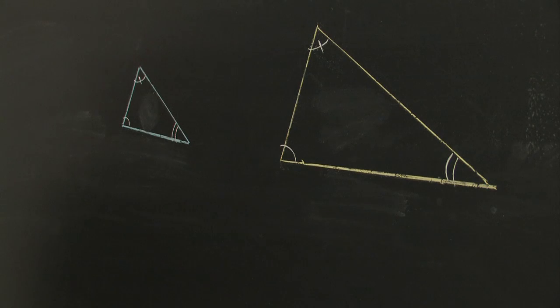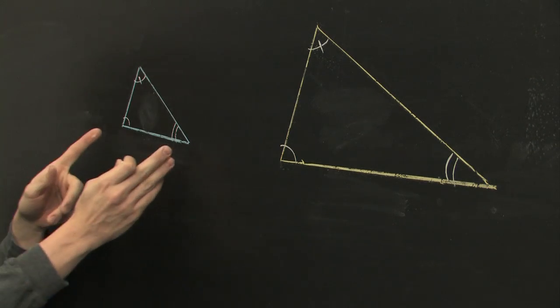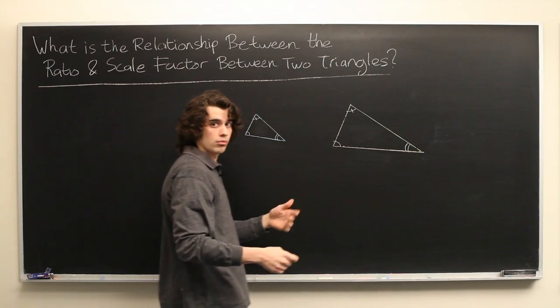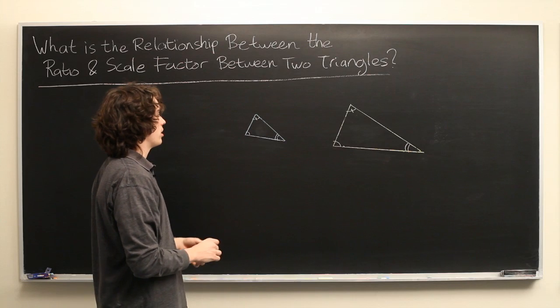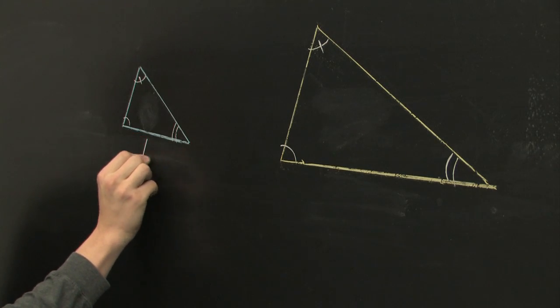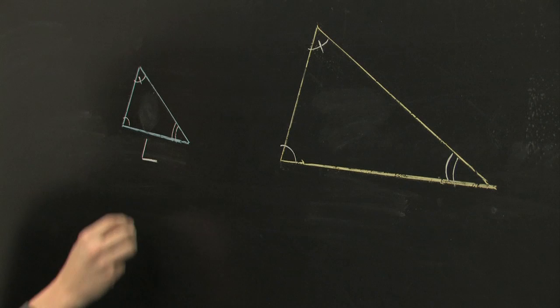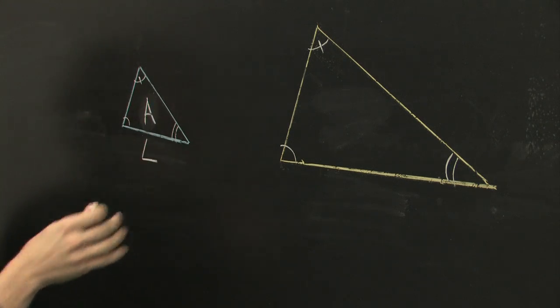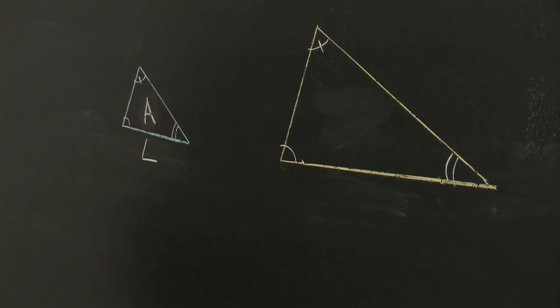But that doesn't tell us anything about their sides. This one might have very different side lengths than this one. Similarity only refers to the angles. So, let's say that this side here has a length of L, and suppose that we also know that the area of this triangle is A, where A and L can be any number.